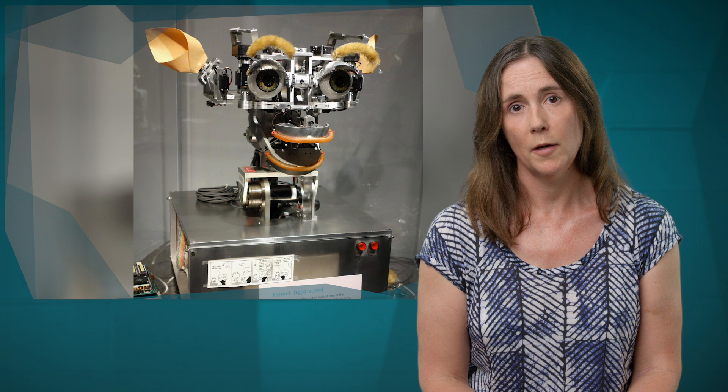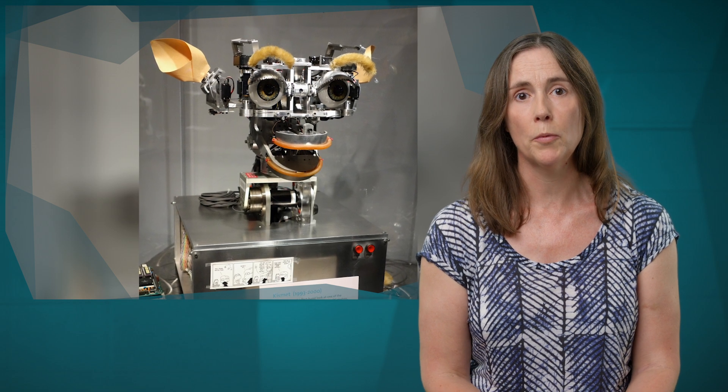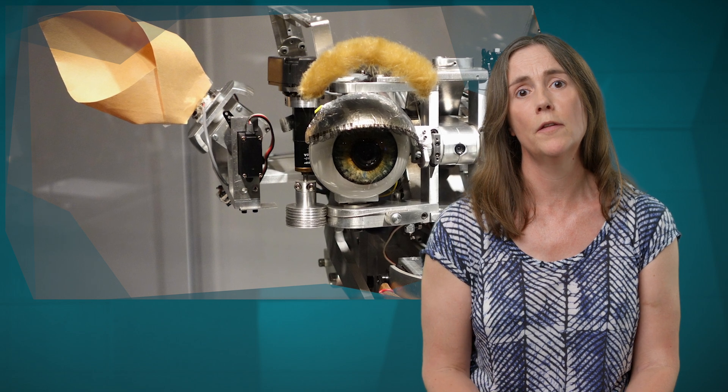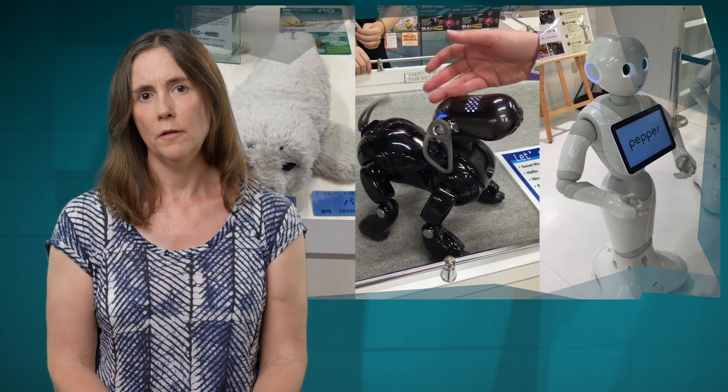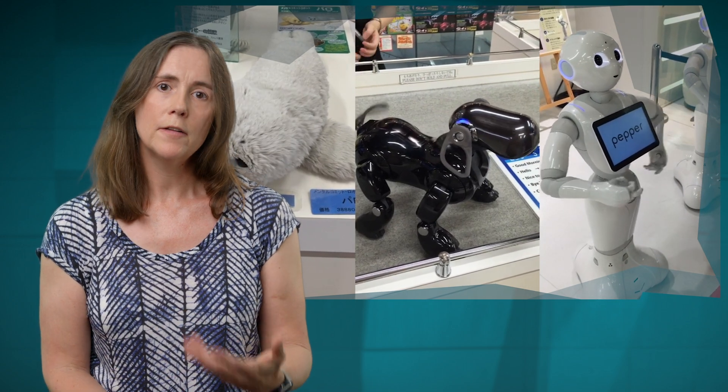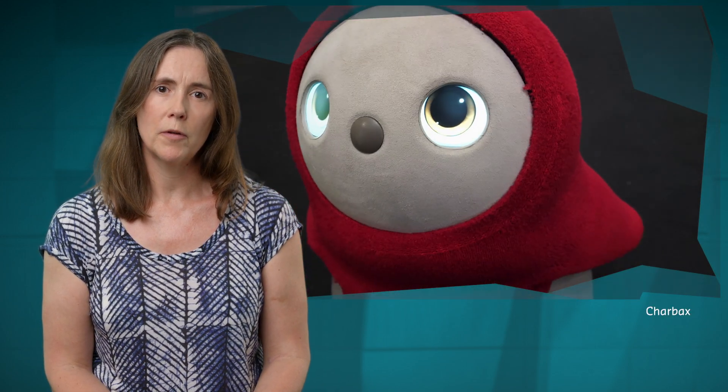There have already been quite a few examples of robots that are designed to express emotions. The first social robot was called Kismet, designed at Massachusetts Institute of Technology by Cynthia Breazeal. While these robots can express emotion and therefore seem to have emotions, broadly underlying this, there are no feelings in those robots.